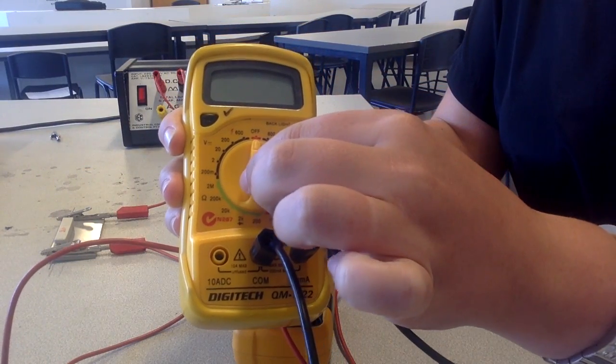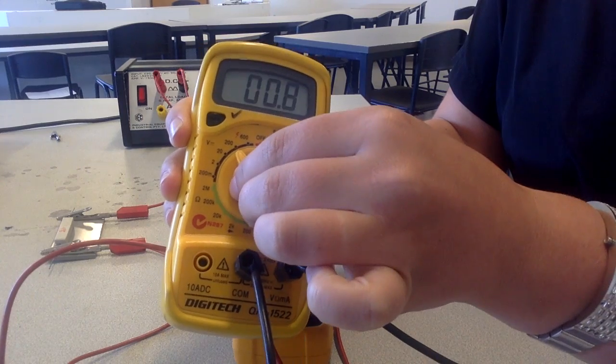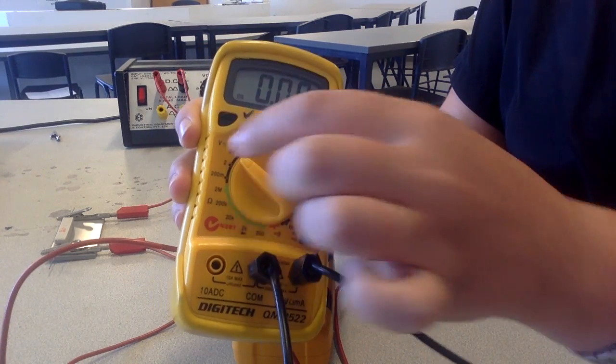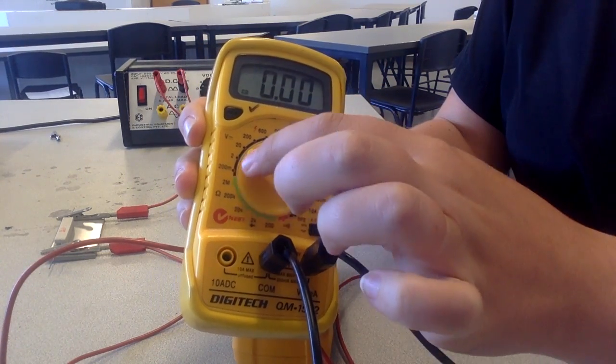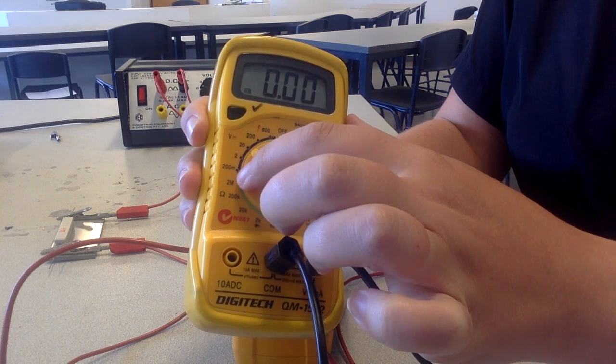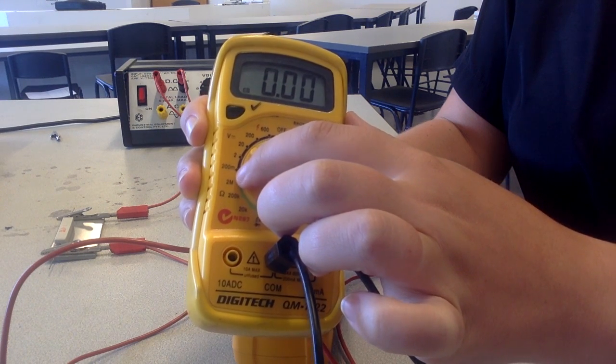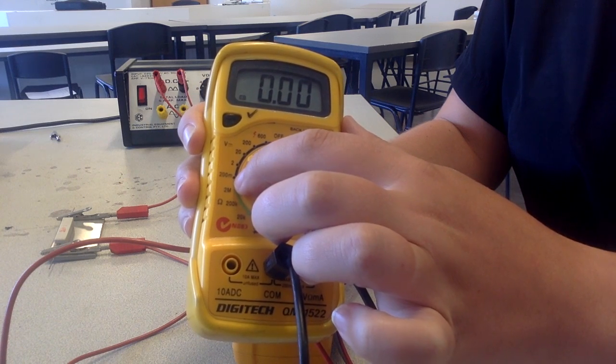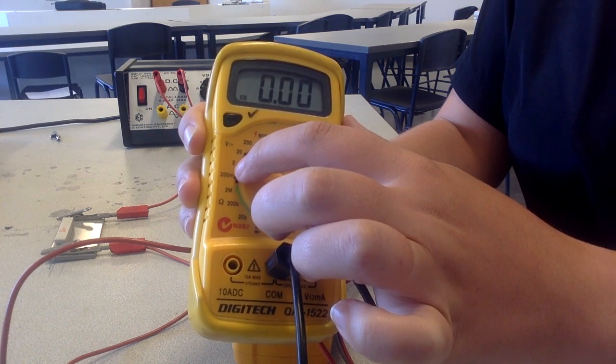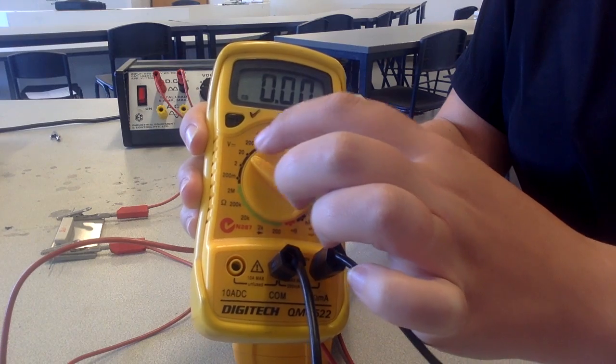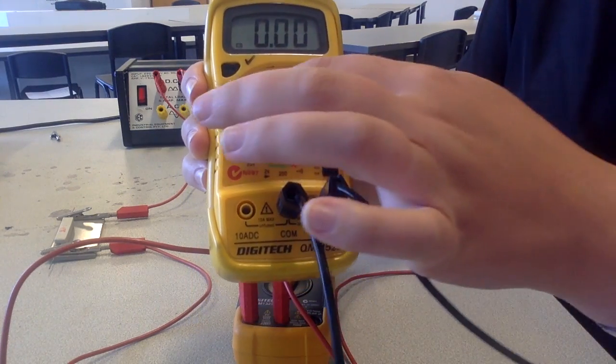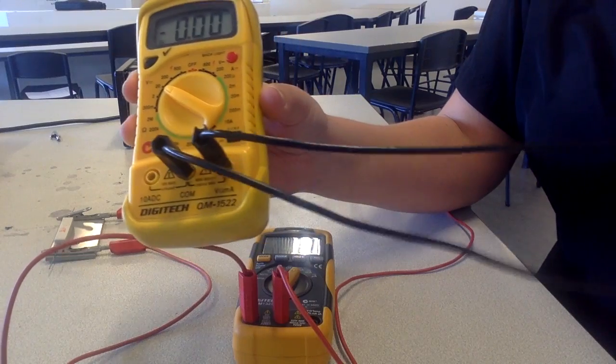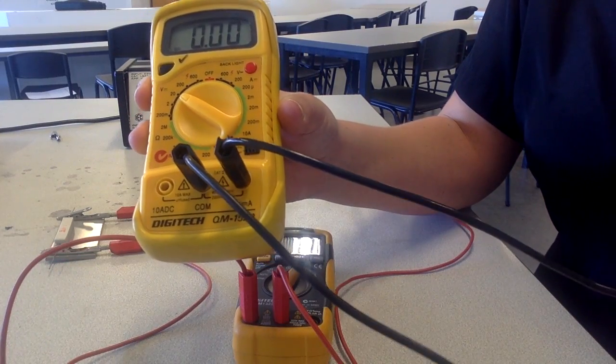Because we're measuring voltage we're going to turn it towards where the V is. This measures up to 200 microvolts, 2 millivolts, 20 volts, 200 volts, 600 volts. Okay so we'll just put it onto the 20 volts and we won't be going higher than 20 volts. Our power supply only goes up to 12.